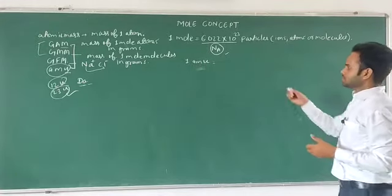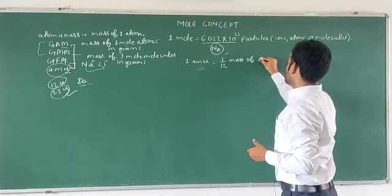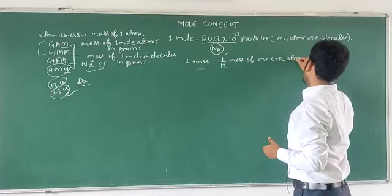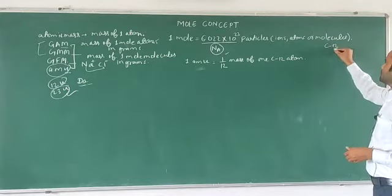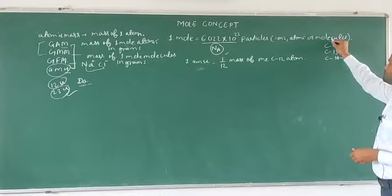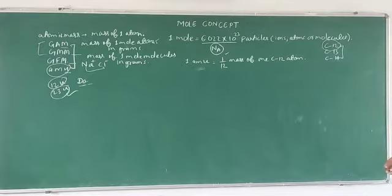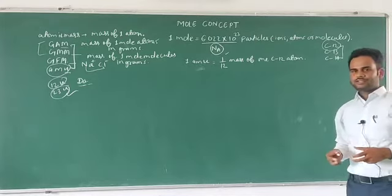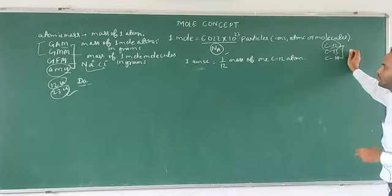So what is atomic mass unit? Atomic mass unit is actually 1/12th of the mass of one carbon-12 atom. Why are we taking the carbon-12 atom? Because carbon has isotopes like carbon-12, carbon-13, carbon-14, but in nature carbon-12 is found in the major amount. And because we can divide it into 12 equal parts, we are using this as a standard for atomic masses.